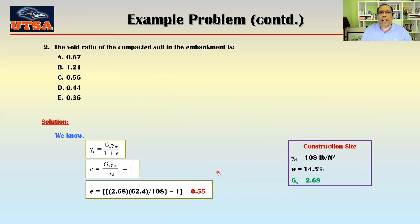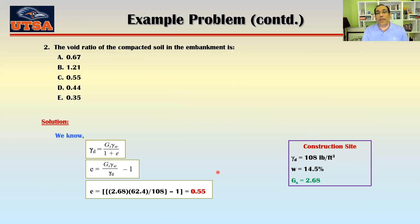Notice that at the borrow site the void ratio was 1.1, then it decreased to 0.8 on the truck because they compact it somewhat with a backhoe to fit more in the truck, and at the compacted construction site the void ratio is 0.55. So the void ratio is decreasing — the soil is becoming more compacted. This is the usual case: the construction site must be compacted much higher than the borrow site.